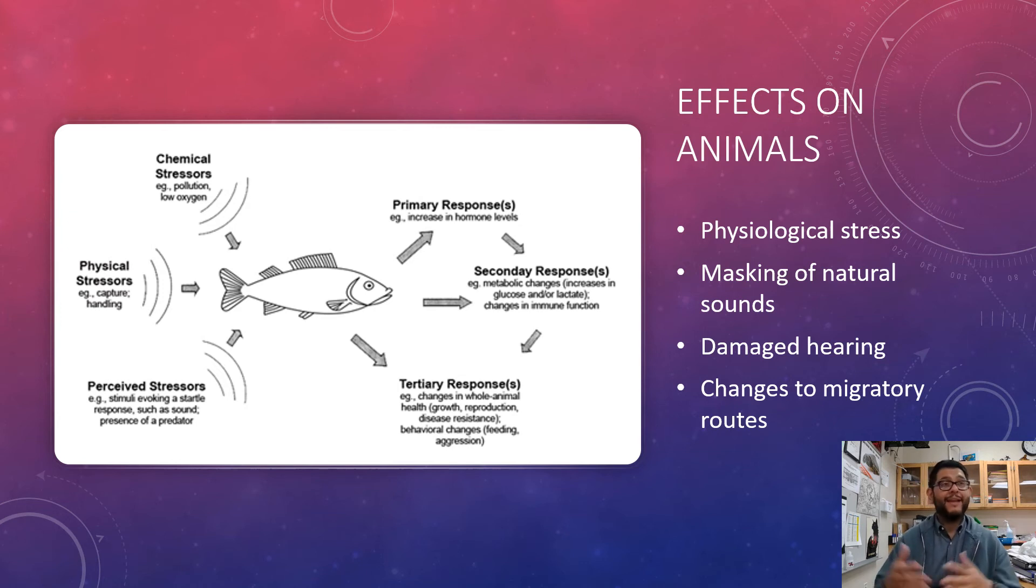They can also have a masking of normal natural sounds, damaged hearing, and changes to migratory routes. So if you're talking about fish or dolphins or mammals in the ocean, and they hear noise that stresses them out, that could be something that will change their patterns normally, and that's going to have an effect on their survival in the ecosystem.